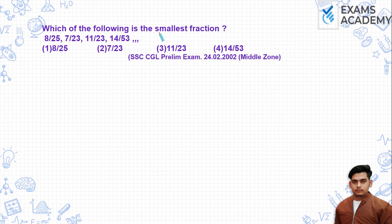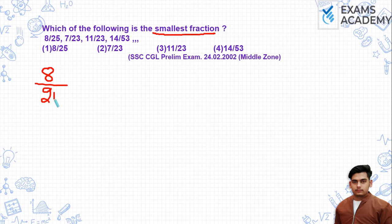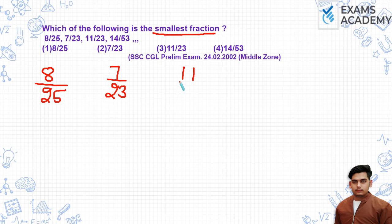The question is: which of the following is the smallest fraction? The fractions given are 8 by 25, 7 by 23, 11 by 23, and 14 by 53.